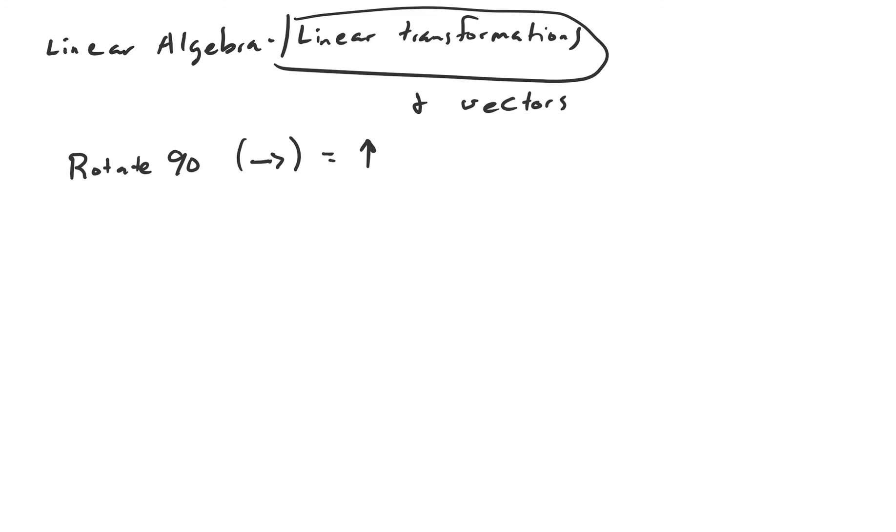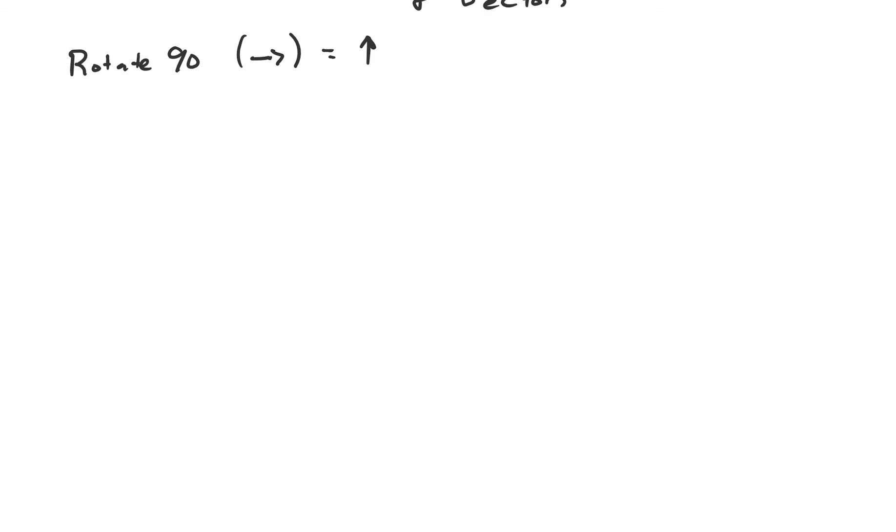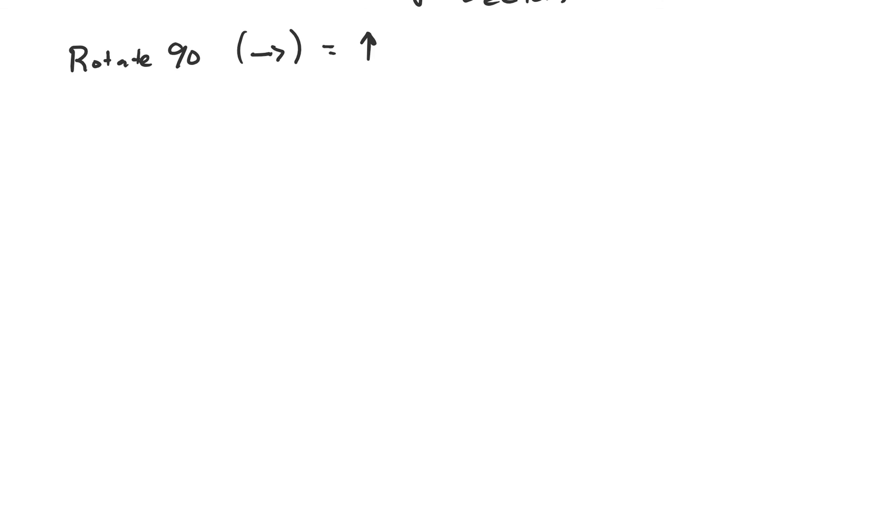We usually don't denote linear transformations by writing out what they do like 'rotate 90'. Instead, linear transformations are represented as capital letters with hats on them to distinguish them from numbers. Having the linear operator T̂ act on the vector |a⟩ would be expressed like T̂|a⟩ = |b⟩. These things are called transformations because they transform one vector into another vector.